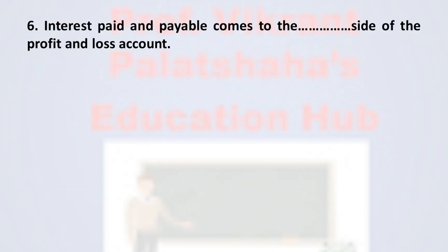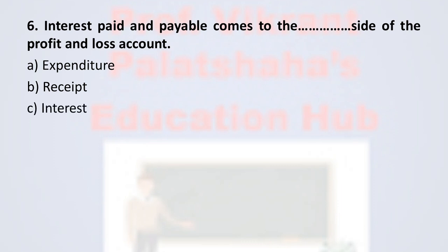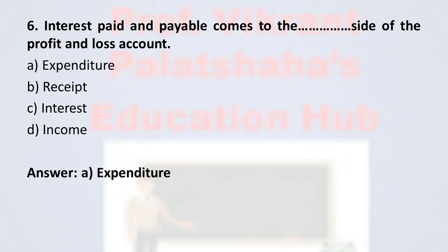Question number 6: Interest paid and payable comes to the ___ side of the profit and loss account. Option A: expenditure. Option B: receipt. Option C: interest. Option D: income. The correct option is option A, expenditure. Interest paid or payable is recorded under the expenditure or debit side of the P&L account. Therefore, the correct option is option A.